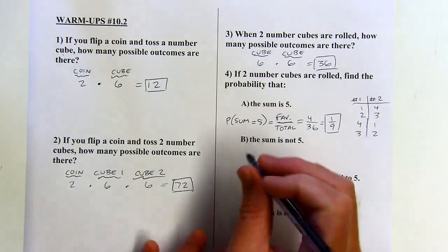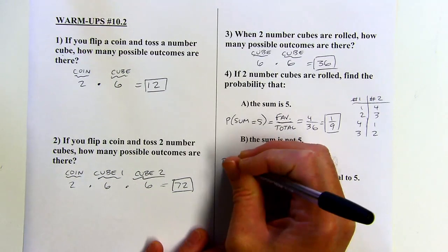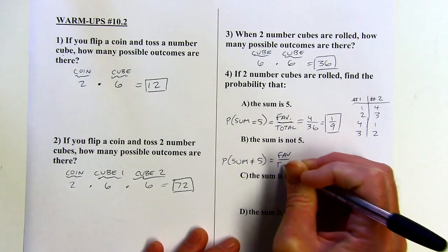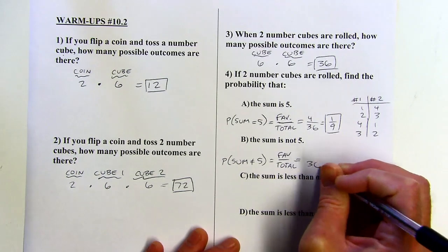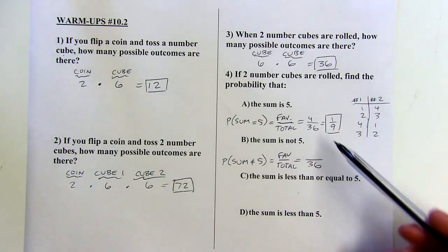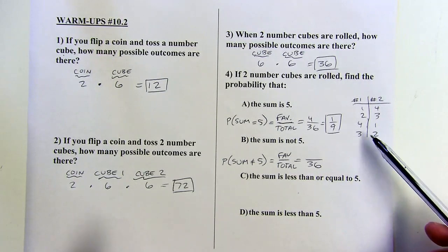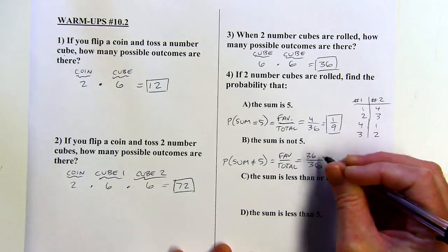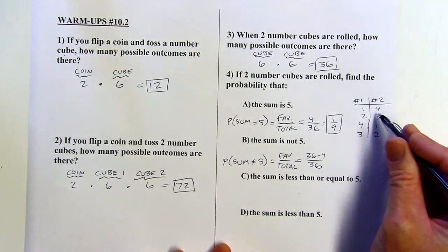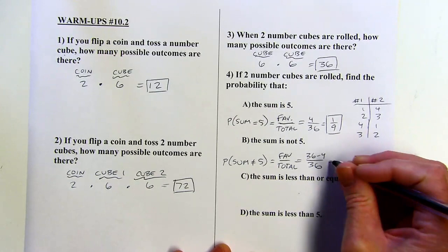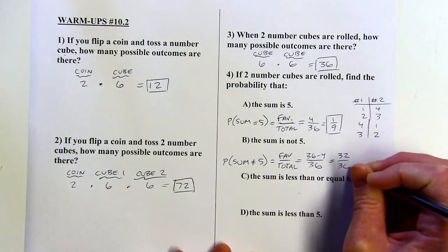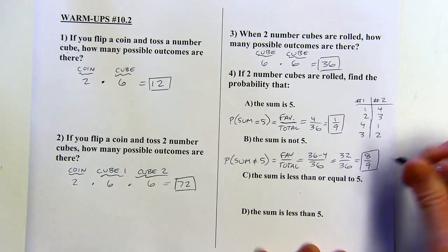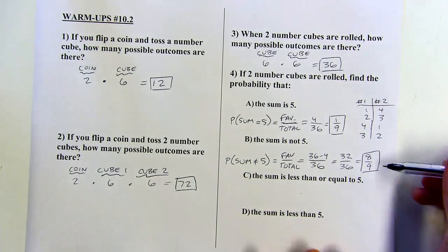Probability that the sum is not five. You could use the same strategy and make a table of all favorable outcomes — it's going to be something out of 36. But instead, I already know the ones where the sum is five, so all the other ones are where the sum is not five. I'll take all 36 possible rolls and subtract out the four that sum to five, giving 32 out of 36. Dividing both by four gives eight-ninths. It makes sense: one-ninth of the time the sum is five, and the other eight-ninths it is not.